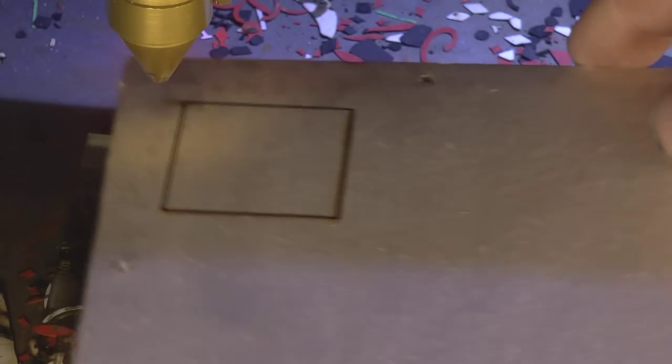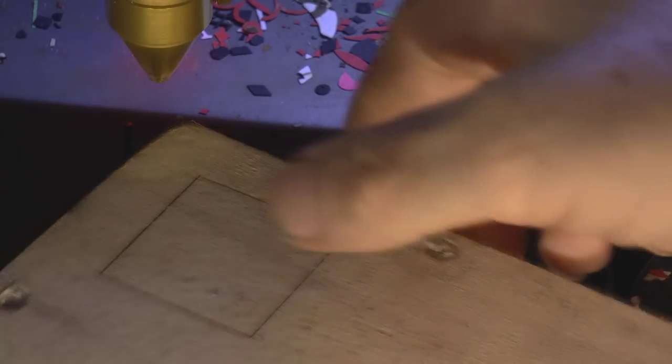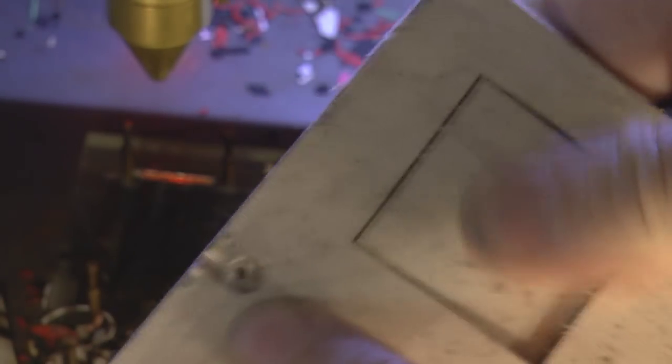Now it certainly hasn't dropped out at that speed, but when we take a look underneath you can see that it has actually cut through. If I just give it a gentle push, because the beam hangs very slightly behind at the bottom, it may well be that it's hanging on the corners only. So there we go, it just pushed out.